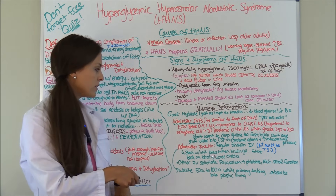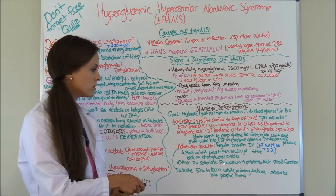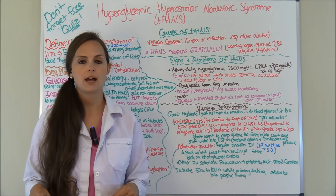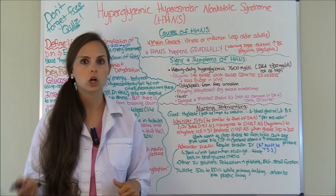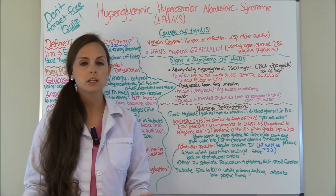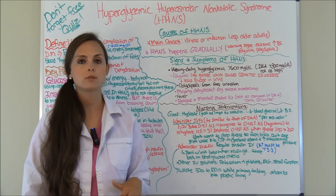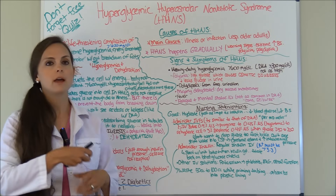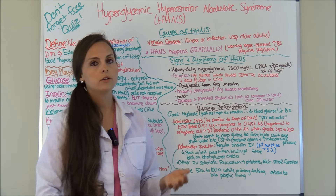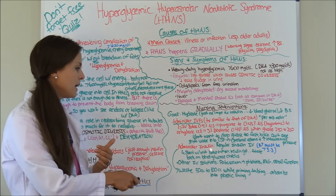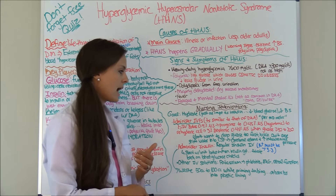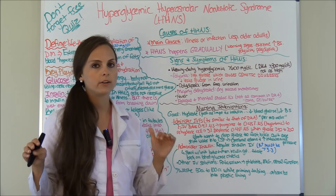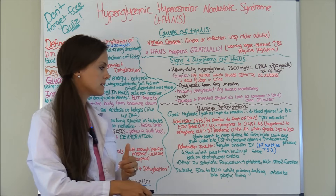With insulin, you'll give a unit bolus per doctor's orders, then start an insulin drip and titrate it based on glucose checks. You will be checking glucose levels continuously and titrating the drip until you achieve a good glucose level. The patient will then be started back on subcutaneous insulin or oral medications. A potassium solution may also be given to keep potassium levels normal while administering insulin, since insulin moves potassium back into the cells.